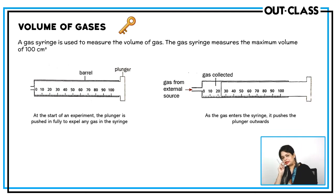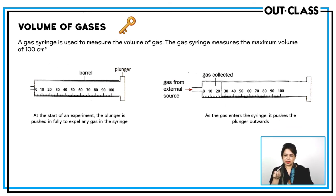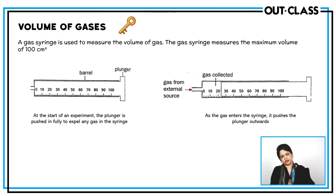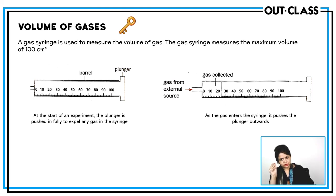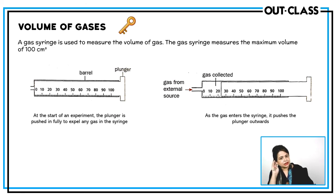For the volume of gases, the best method is a gas syringe, which has a capacity of up to 100 cm³ and is a very accurate method. Gas syringes are normally used in rate of reaction experiments. Another method is to collect the gas above water in an inverted graduated measuring cylinder — this can also be used to measure gas volume. But the best method remains the gas syringe.